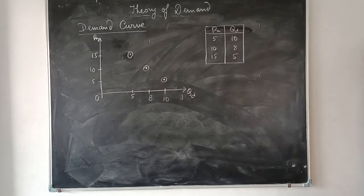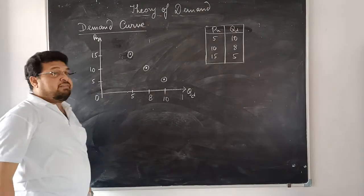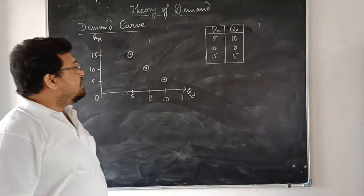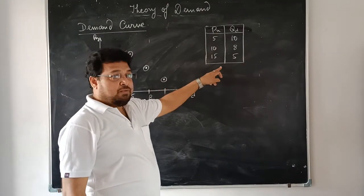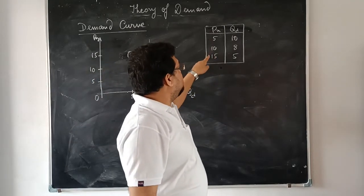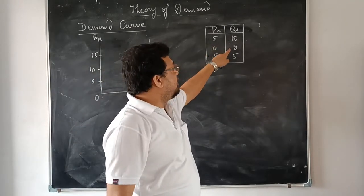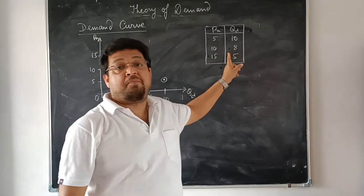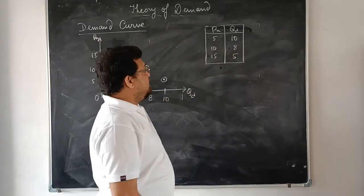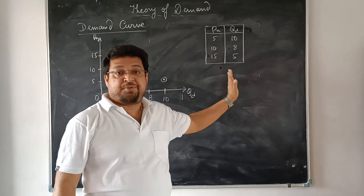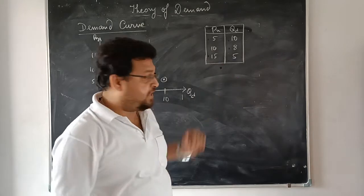First, we need to see how an individual demand curve is derived. Suppose you have this demand schedule that follows the law of demand, and as price increases, quantity demanded decreases. These are some hypothetical combinations taken — no real data. Following the law of demand, some hypothetical data is there.